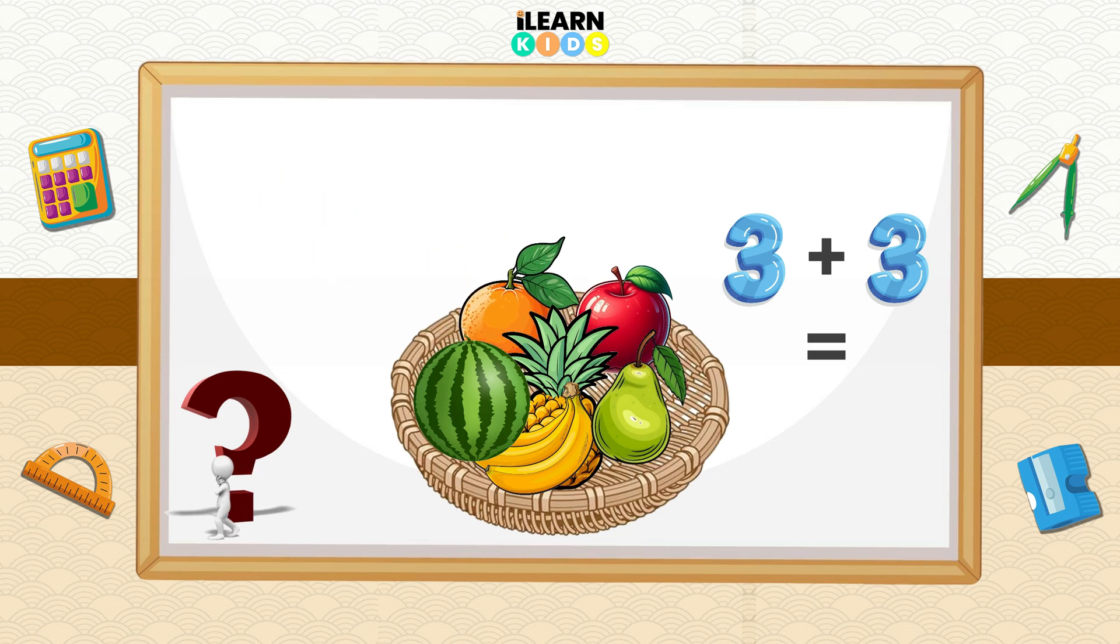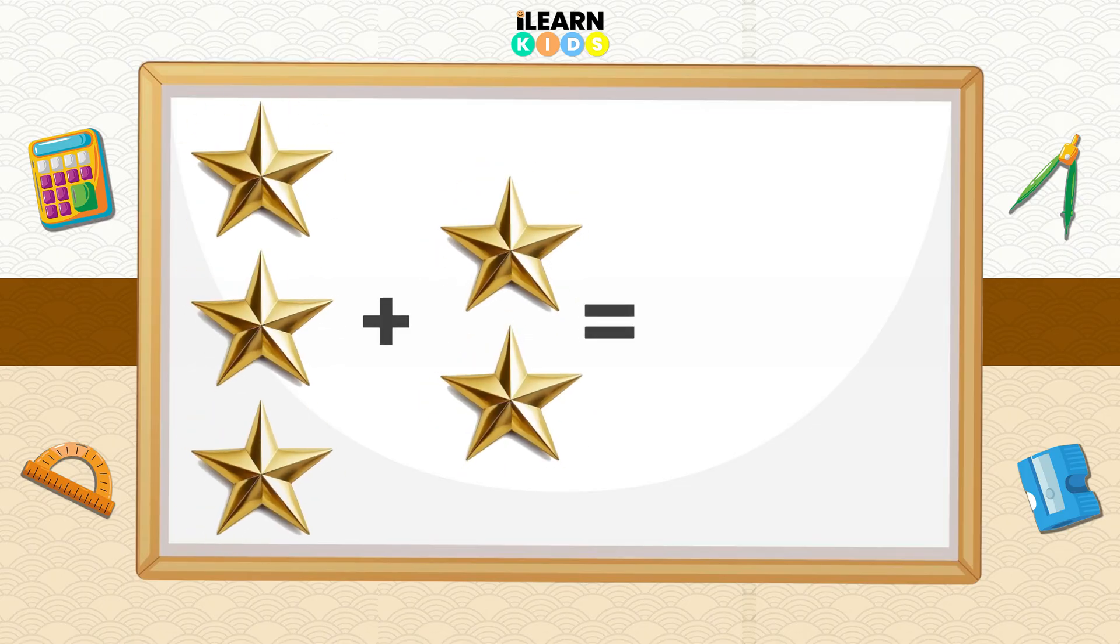That's right, it becomes bigger! Now let's see how it works. Our first practice, we're going to be counting with stars: 2 plus 3. Let's count all together. 1, 2, 3, 4, 5.